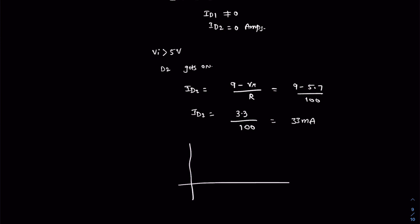If you plot against input voltage VI, it must be 0 till VI equals 5 volts, then D2 gets on and it is 33 milliamperes. That's it, thank you for watching.